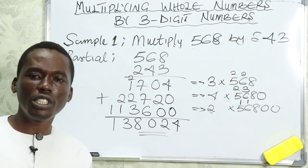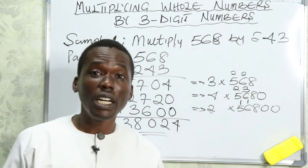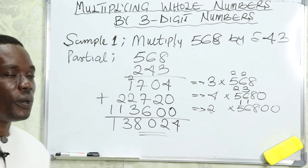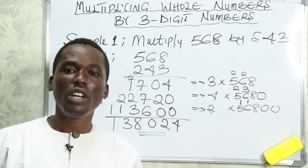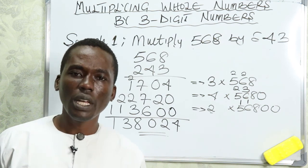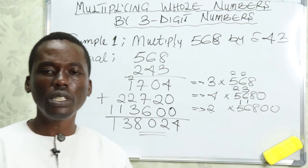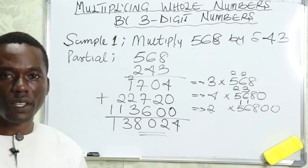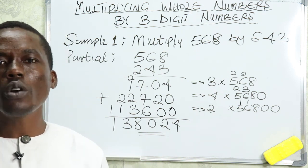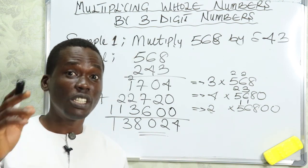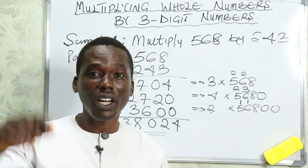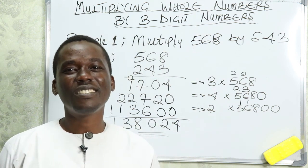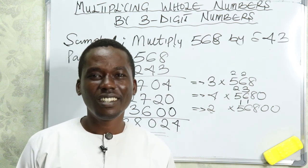The final solution is 138,024. Notice that the solutions are the same across all three methods. The essence of teaching you these three methods is for you to know which is easiest for you, so you can pick that one and use it constantly — unless you are told to use a specific method. In our next video, we're going to look at word problems in multiplication. Don't miss that video. If you haven't subscribed, hit the subscribe button now so you're the first to get that video when it's released. I look forward to seeing you in the next video class.